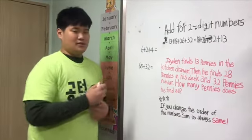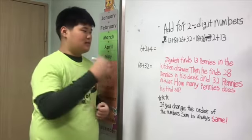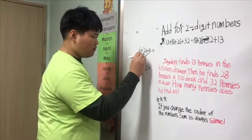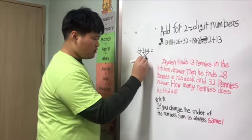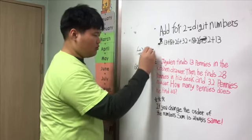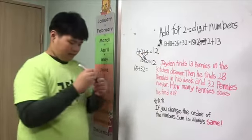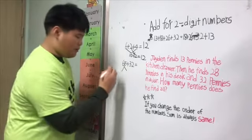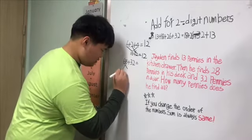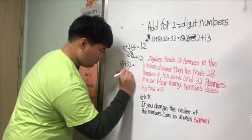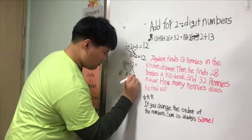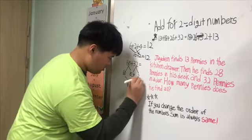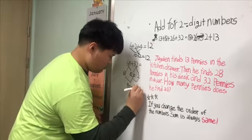Look at this problem. 6 plus 2 plus 4 is 10 plus 2. And then we break this number into parts of tens and ones. So, 19 plus 7 is equal to 26.